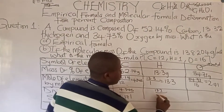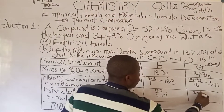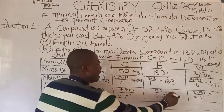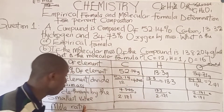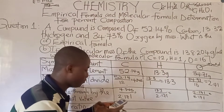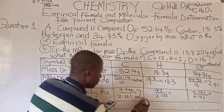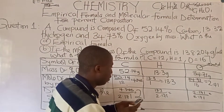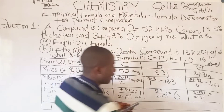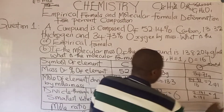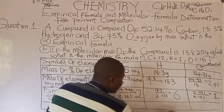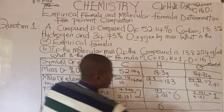For carbon: 4.345 over 2.171 equals 2. For hydrogen: 13.3 over 2.171 equals 6. And for oxygen: 2.171 over 2.171 gives us 1. So the mole ratios of the elements in the compound are 2, 6, and 1.